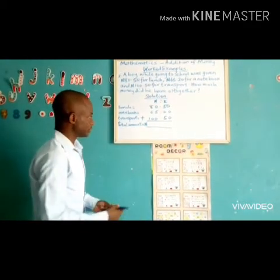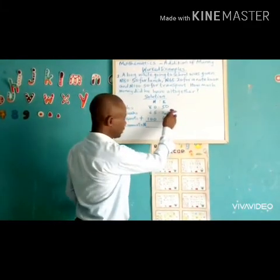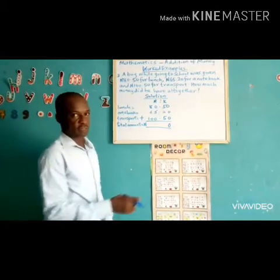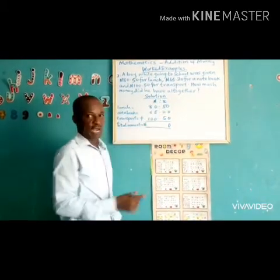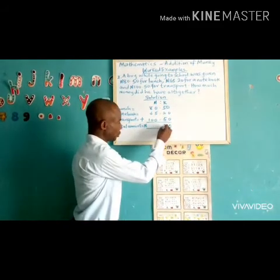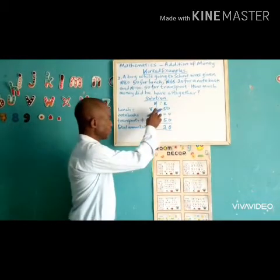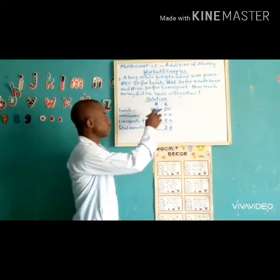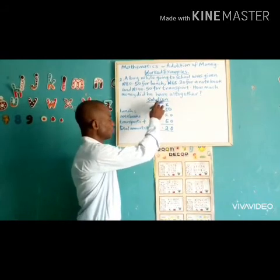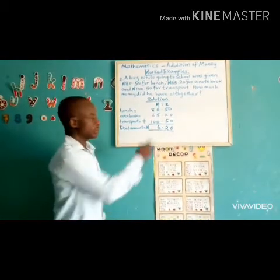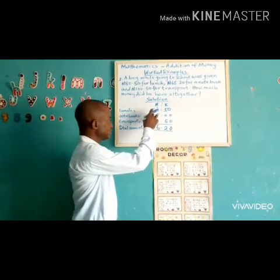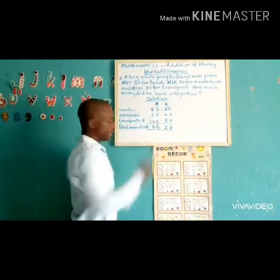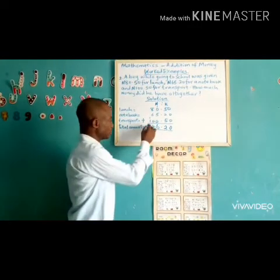Now let's do the addition. 0 plus 0 equals 0. 0 plus 0 gives us 0. 5 plus 2 gives us 7. 7 plus 5 gives us 12 — put down 2 and carry 1. Then 0 plus 5 gives us 5, and 5 plus 0 gives us 5. 5 plus 1 gives us 6, and 0 plus 6 equals 6. Then 6 plus 8 gives us 14 — put down 4 and carry 1. The 1 plus 1 gives us 2.